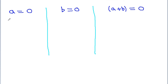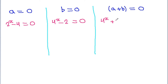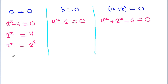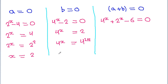From the first equation, a equal to 0 gives 2 to the power x minus 4 equals 0, so 2 to the power x equals 4, which is 2 squared, giving x equals 2. From the second equation, b equal to 0 gives 4 to the power x minus 2 to the power x minus 6 equals 0, so 4 to the power x equals 1 over 2, giving x equals 1 over 2.